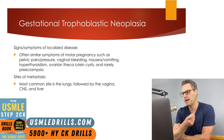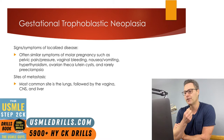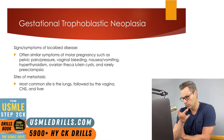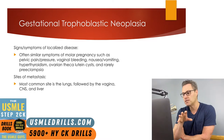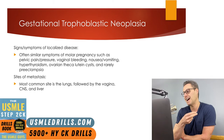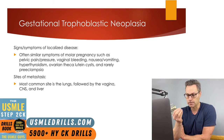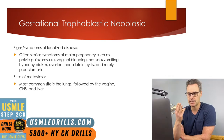Signs and symptoms include pelvic pain and pressure, vaginal bleeding, nausea and vomiting, hyperthyroidism, ovarian thecalutein cysts, and rarely preeclampsia, which would occur before 20 weeks gestation. You also get additional symptoms depending on the sites of metastasis. By far the most common site of metastasis is the lungs — when you think of metastasis of gestational trophoblastic neoplasia, you should immediately think of the lungs. After the lungs, the next most common sites are the vagina, CNS, and the liver.